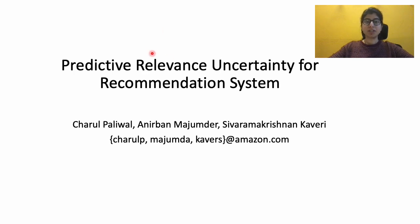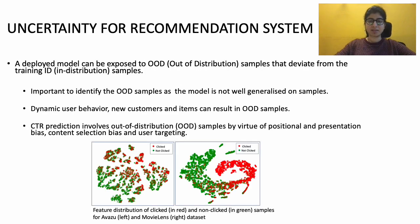Hi everyone, this is a promotional video for our work titled Predicted Relevance Uncertainty for Recommendation System. A deployed recommendation system model can be exposed to new items or users that deviate from the training data distribution. Most state-of-the-art uncertainty and OOD detection works are evaluated on classification settings and are not tested for the recommendation system.